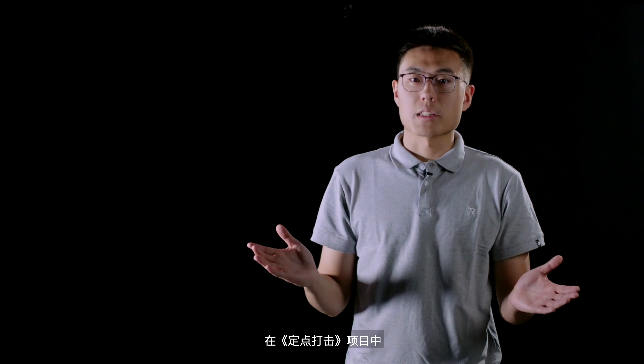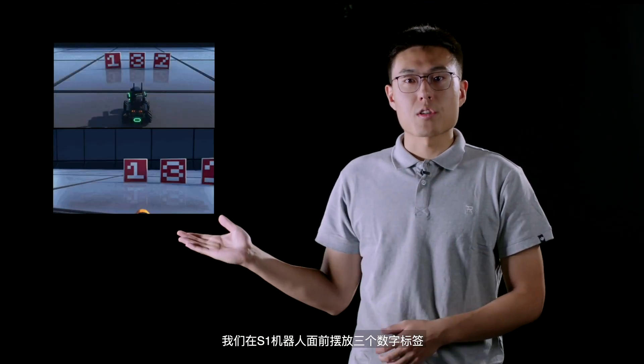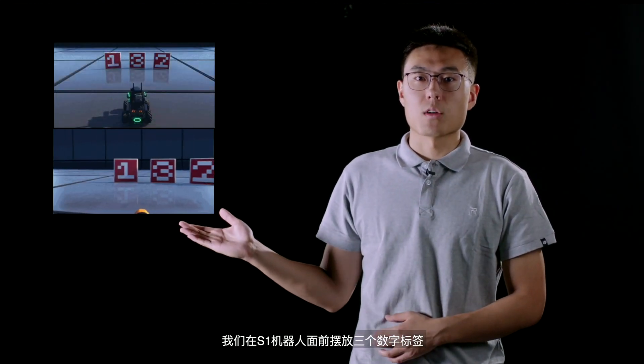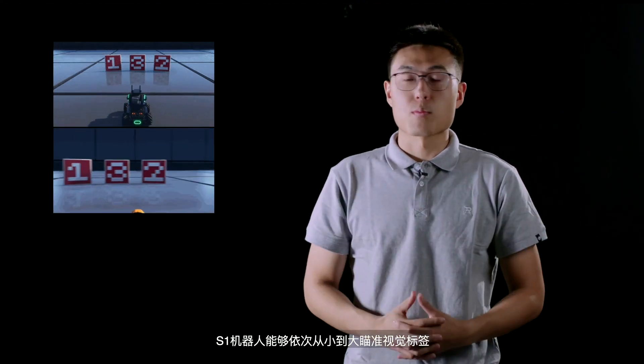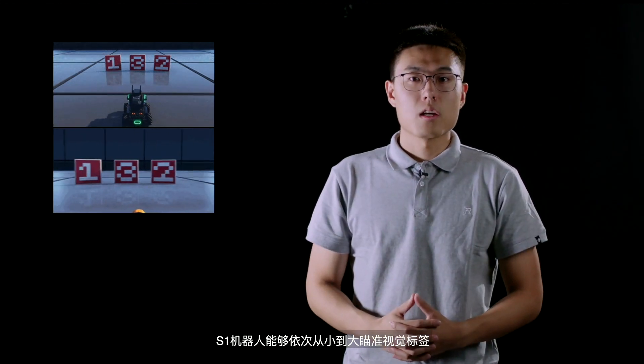In the target practice project, we'll place three visual markers in front of the S1 robot. S1 can aim at visual markers with numbers from small to large, record their positions, and then hit them in sequence. First, we need to store the data of the yaw and pitch axis of the gimbal using a list, then extract data from the list and assign them to the two axes of the gimbal, so as to allow the gimbal to quickly rotate to the specified position.